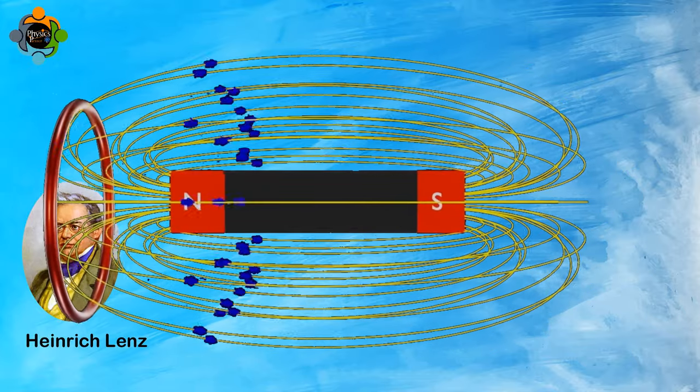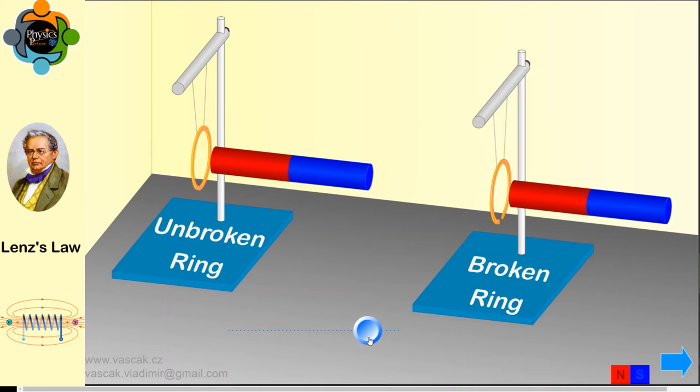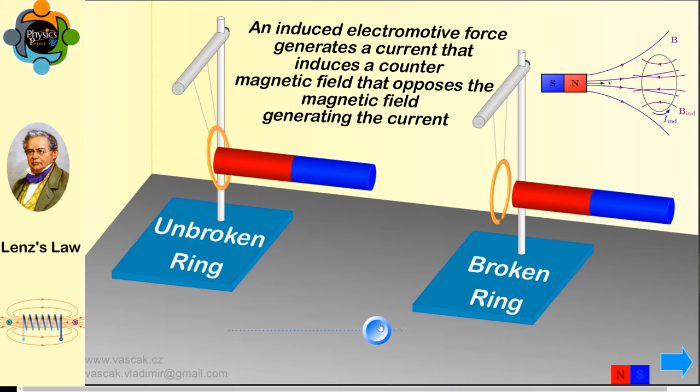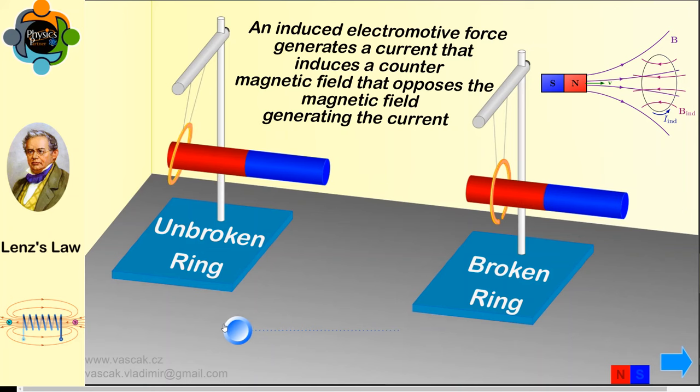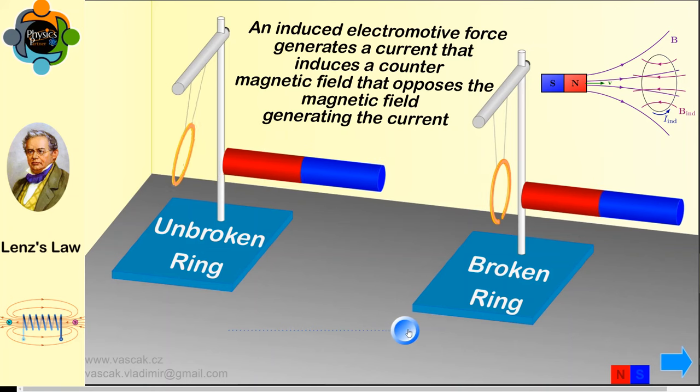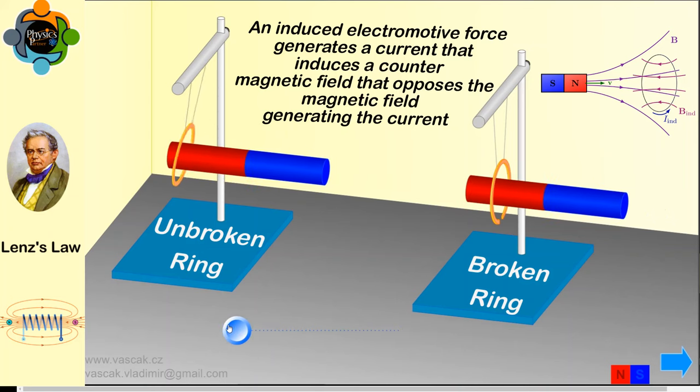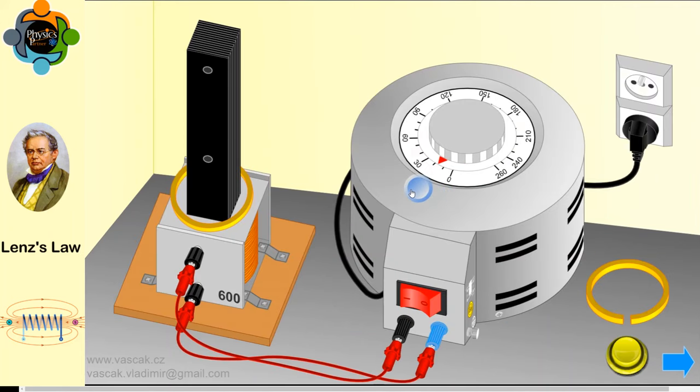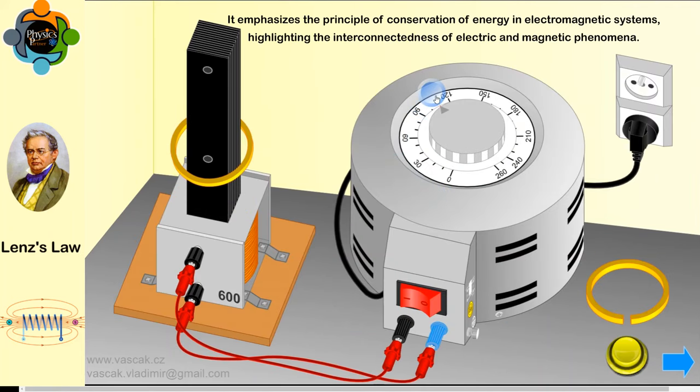Now let's grasp the core concept of Lenz's Law. Simply put, Lenz's Law states that an induced electromotive force generates a current that induces a counter magnetic field that opposes the magnetic field generating the current. In essence, it emphasizes the principle of conservation of energy in electromagnetic systems, highlighting the interconnectedness of electric and magnetic phenomena.